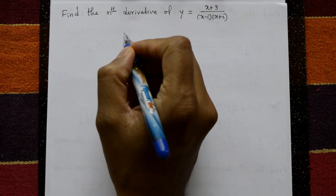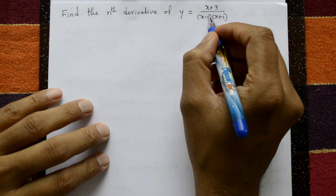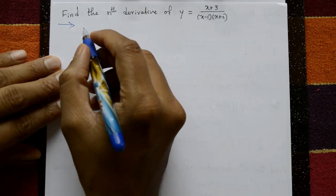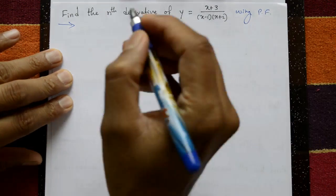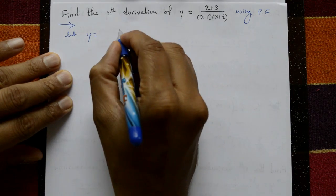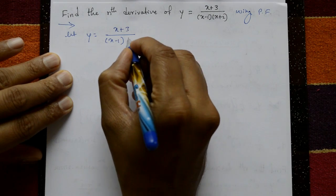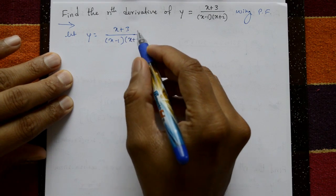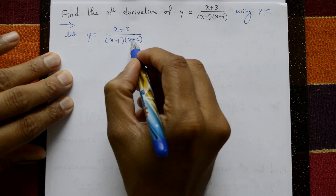Find the nth derivative of y equal to (x+3) / [(x-1)(x+2)]. By using partial fractions, let y be given as (x+3) / [(x-1)(x+2)]. This is a proper fraction since the numerator degree is 1 and the denominator degree is 2.